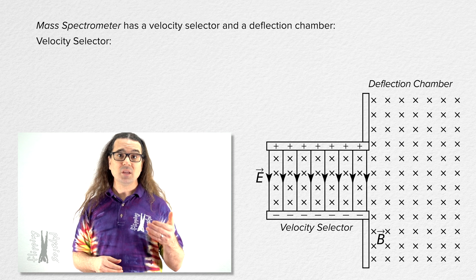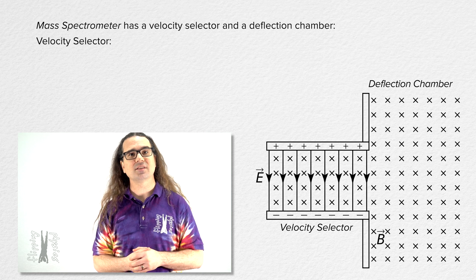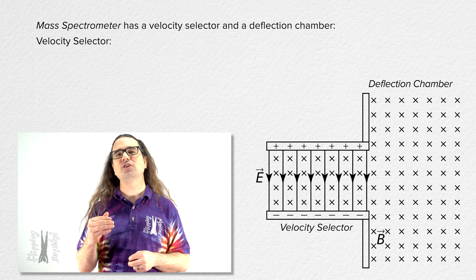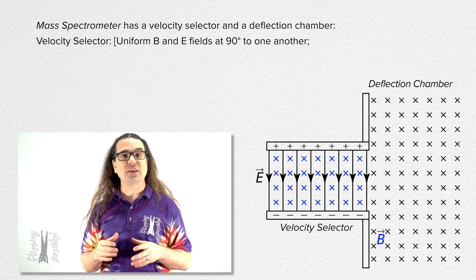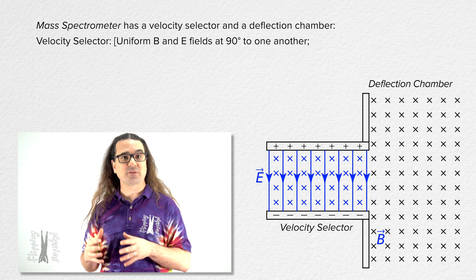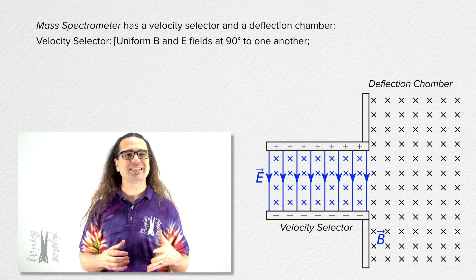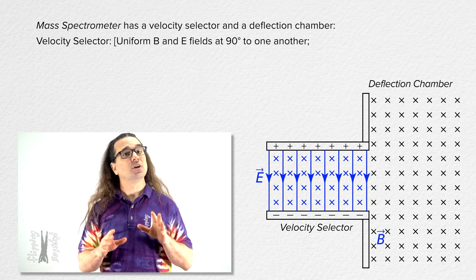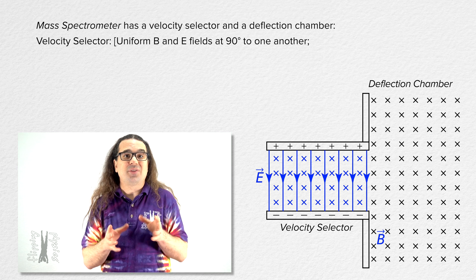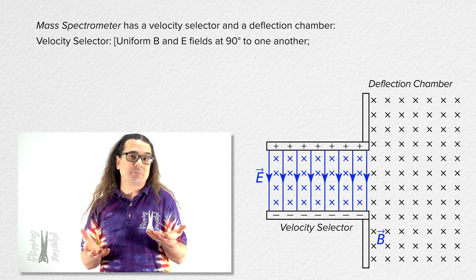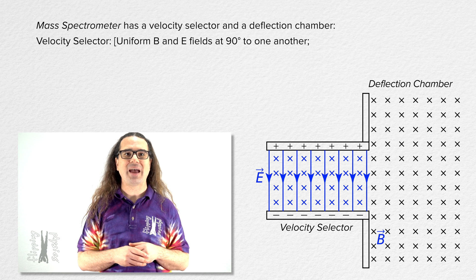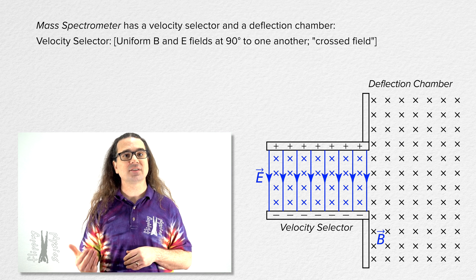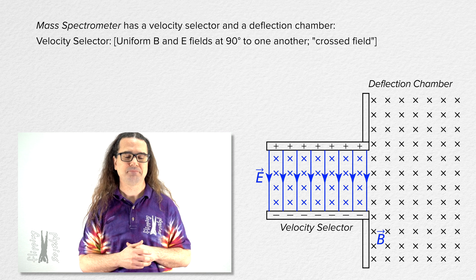In the velocity selector, we have a uniform magnetic field and a uniform electric field oriented at right angles relative to one another. This is also sometimes referred to as a crossed field.